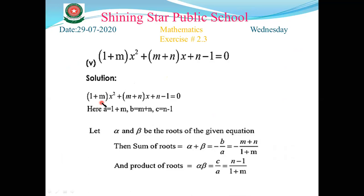Part number five: comparing with the standard form of the quadratic equation, we get a = (1+m), b = (m+n), c = (n-1). Let alpha and beta be the roots. Sum of roots: alpha + beta = -b/a = -(m+n)/(1+n), which is the required answer for the sum of roots. Now we find the product of roots.